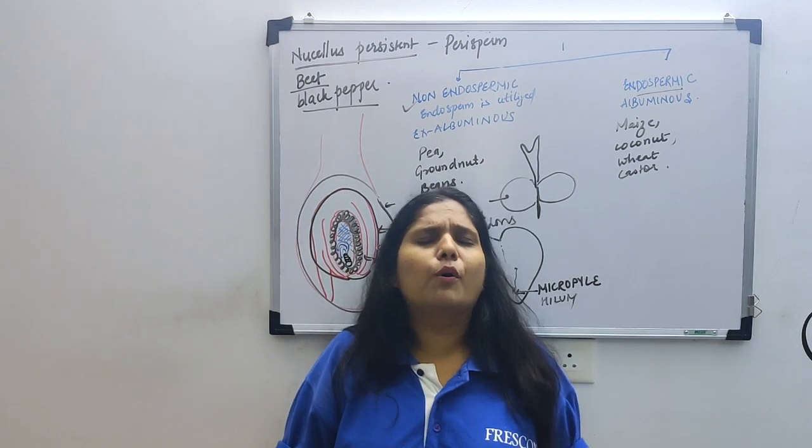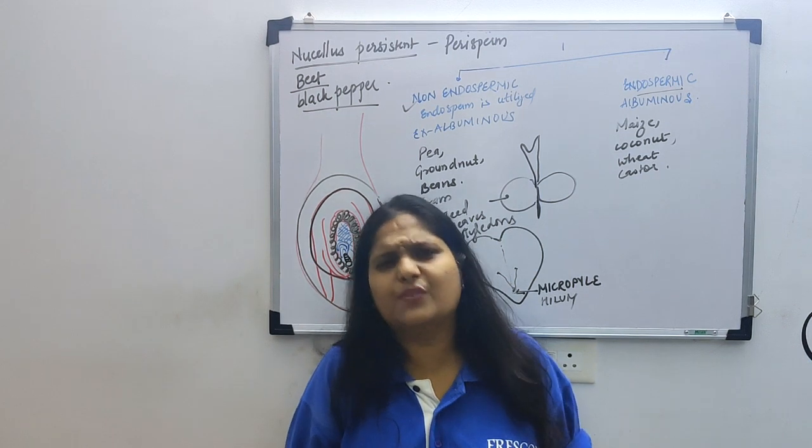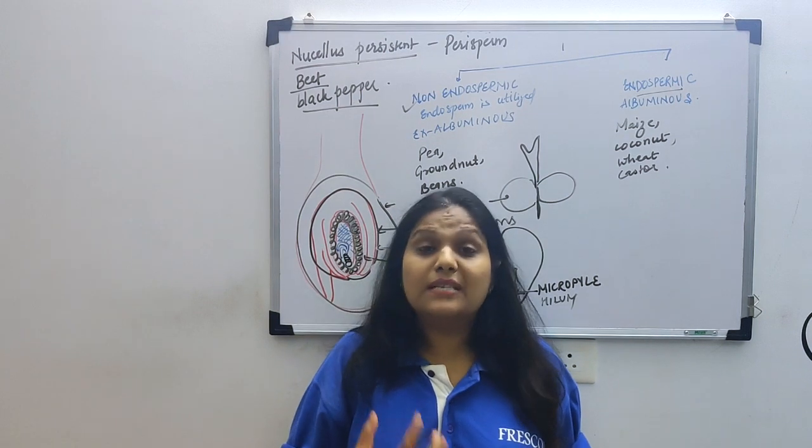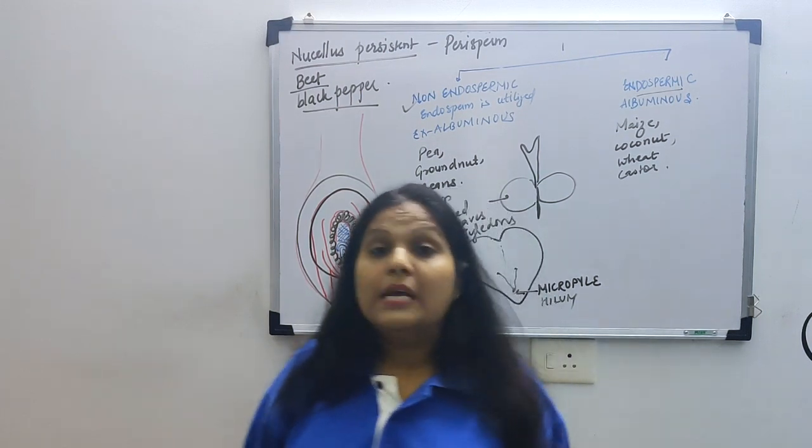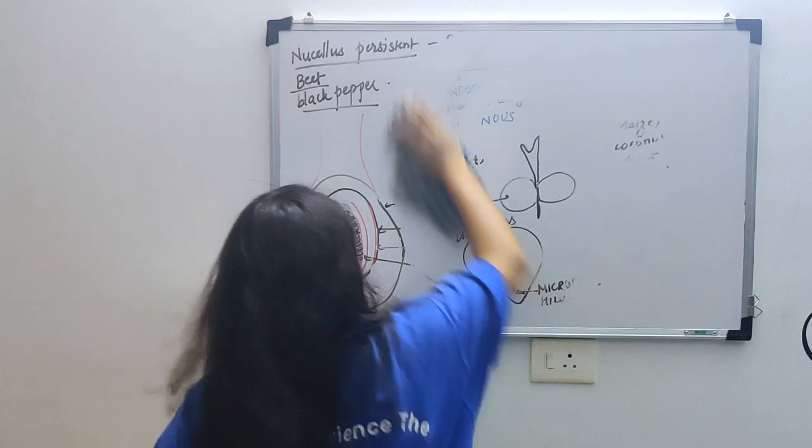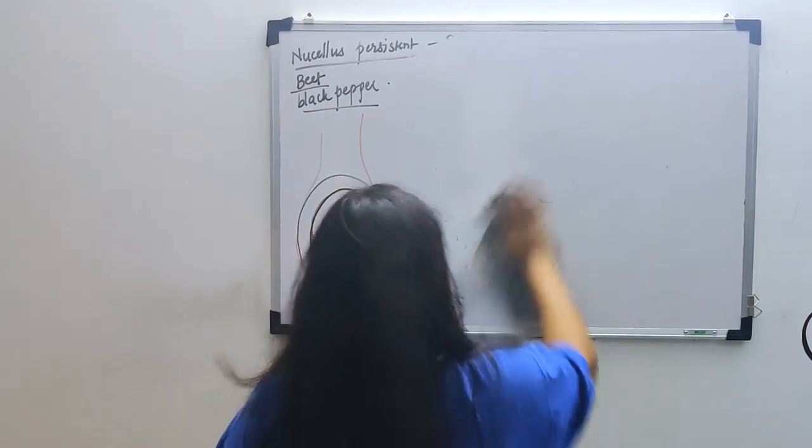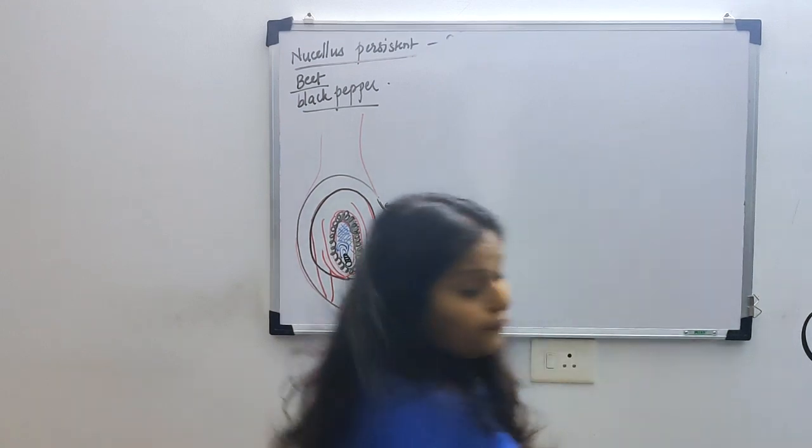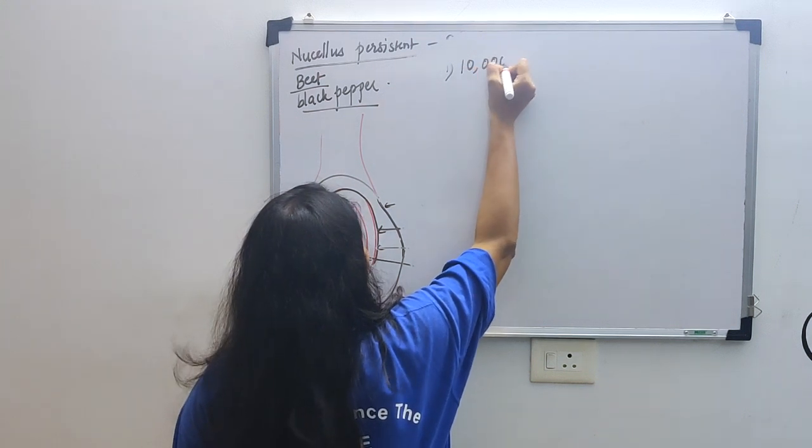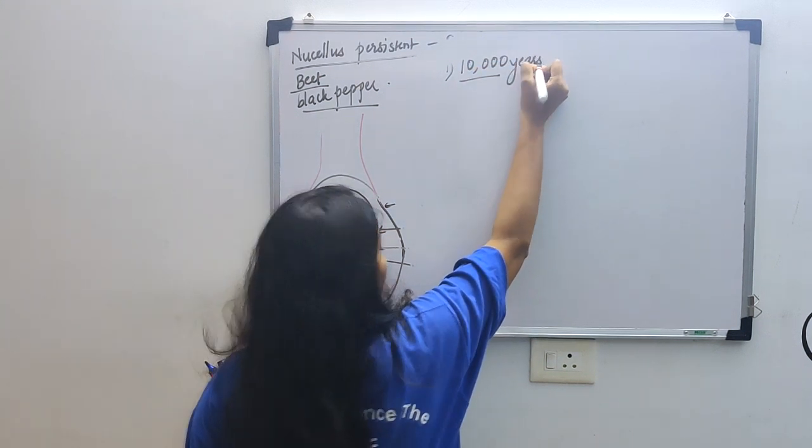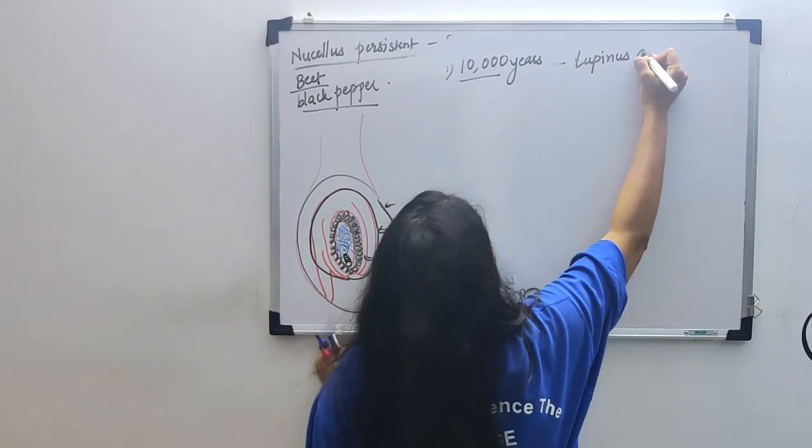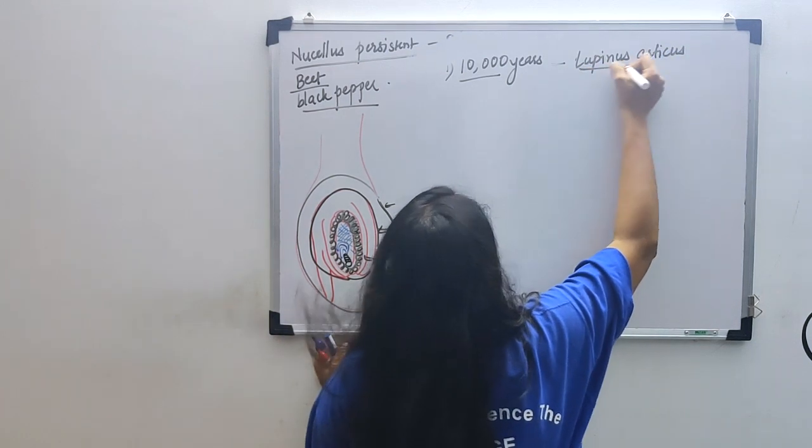Only after the dormancy period ends will that seed germinate if you give it water and nutrients. Some seeds remain alive only for a short time, like citrus. Citrus seeds you will see finish quite quickly, they die. But some seeds remain viable for years together. Remember, there are a few examples that we need to remember. The first example that we need to remember is of a seed which remained active or preserved for 10,000 years in dormancy. This seed's name is Lupinus arcticus.